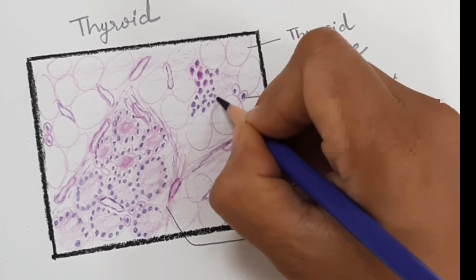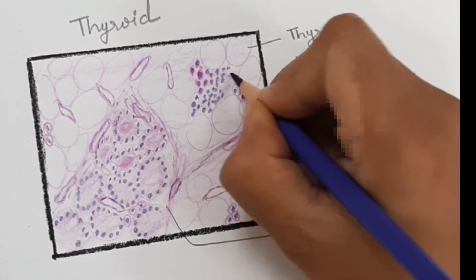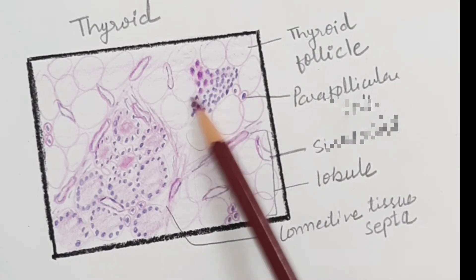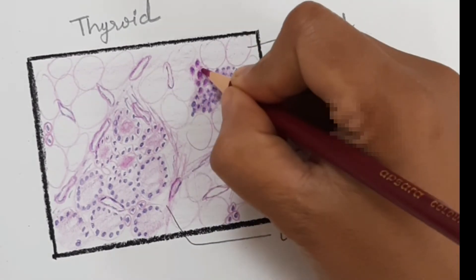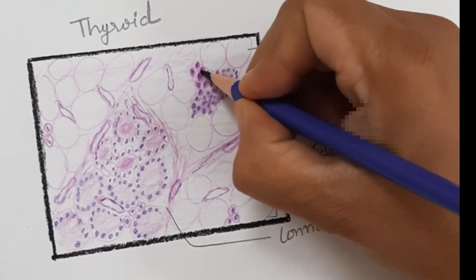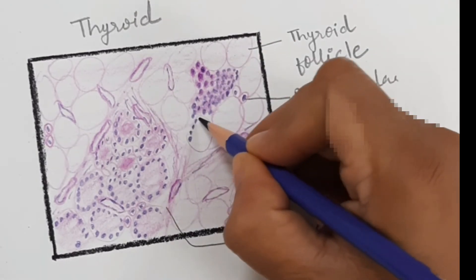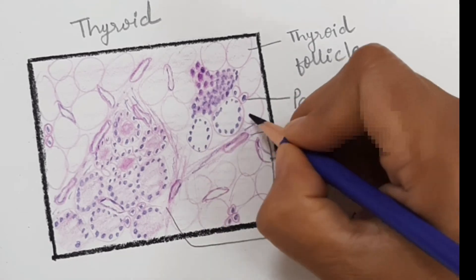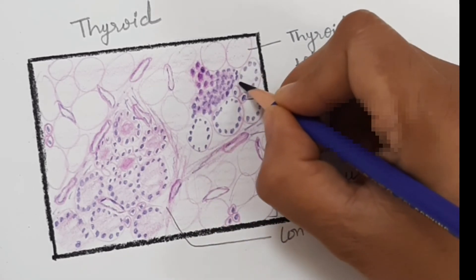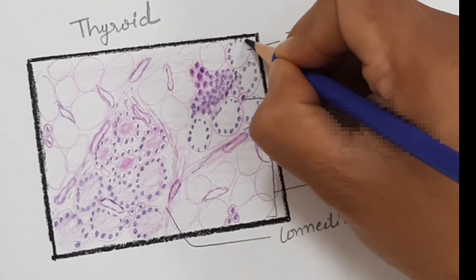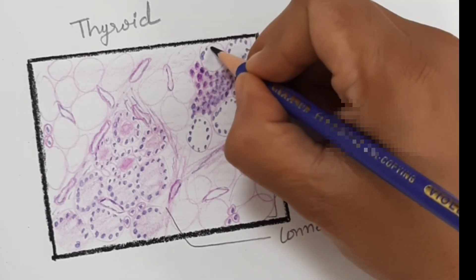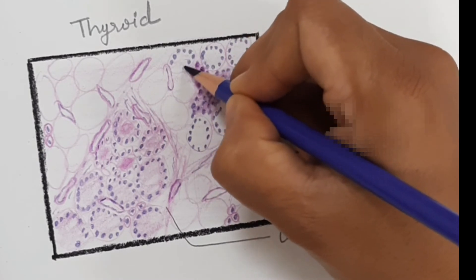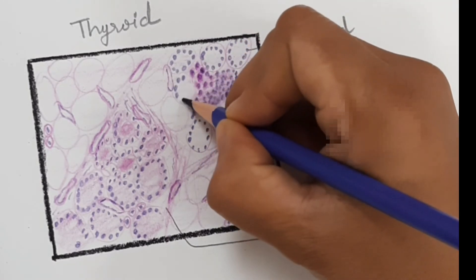On the posterior border of the thyroid gland lies the parathyroid gland. It lies within the capsule on the posterior border, is 2 to 5 mm in size and 50 milligrams in weight, and it secretes the parathyroid hormone.